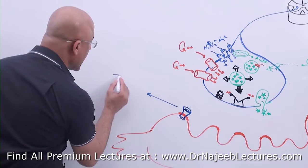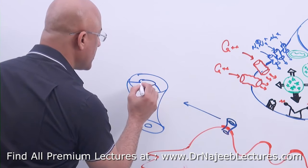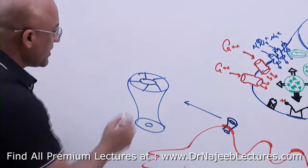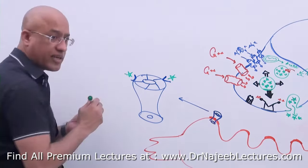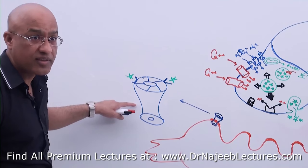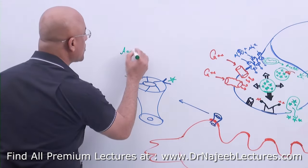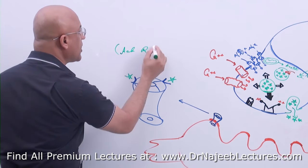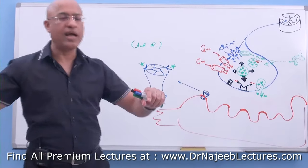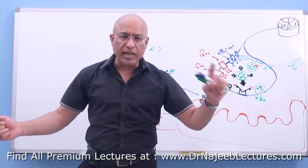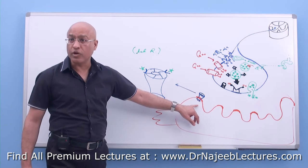These receptors are ion channels — they are pentameric, made of five subunits. At two points there are binding pockets where acetylcholine binds. These receptors can also be stimulated by nicotine, so they are called nicotinic-type acetylcholine receptors. Acetylcholine receptors are basically two types: muscarinic type and nicotinic type. At the neuromuscular junction, there are specialized cholinergic receptors of the nicotinic type.